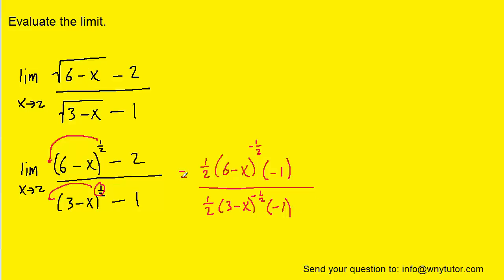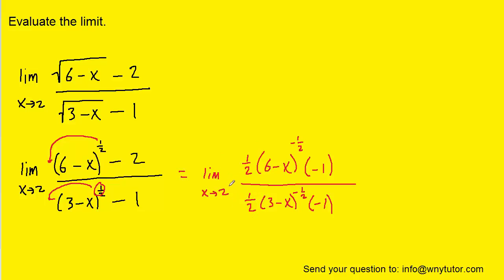We can't forget to write the limit in front, so let's go ahead and do that. Also, since we just applied L'Hopital's rule, you will sometimes see textbooks write LH above the equal sign, since we are technically applying that rule. Now, if we look at this expression, we can see the 1 halves will cancel, as will the negative 1s. And so we can simplify it.